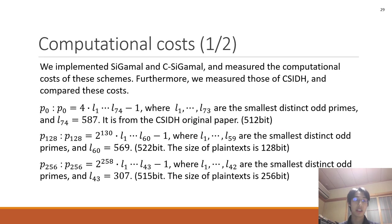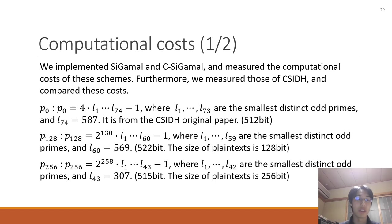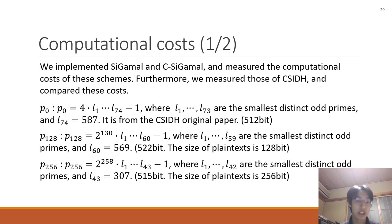Next, I explain the computational costs of C-GAMMA and CC-GAMMA. We implemented C-GAMMA and CC-GAMMA and measured the computational costs of these schemes. Furthermore, we measured those of CSIDH and compared the costs. We take three parameters. The first parameter is P0, from the CSIDH original paper. The second one is P128 — it is 522-bit and the size of the plaintext is 128-bit. And the third one is P256, which is 515-bit and the size of the plaintext is 256-bit.